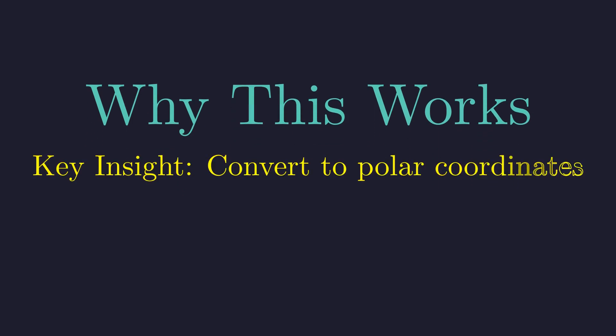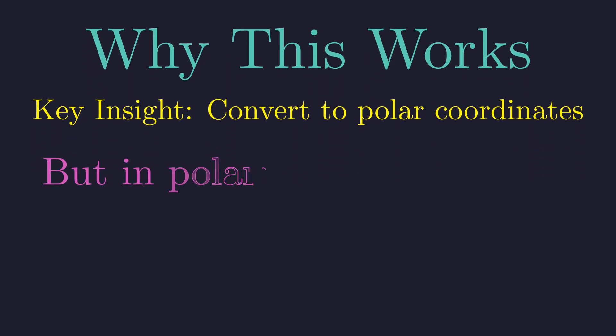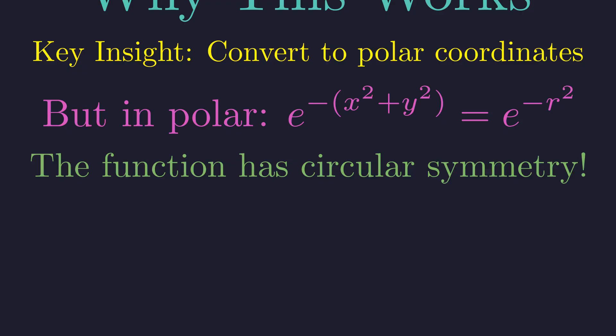So why does this trick work? The key was converting to polar coordinates. In rectangular coordinates, this integral seemed impossible. But in polar coordinates, the exponent simplifies to just negative r squared, which only depends on distance from the origin. This works because the function has perfect circular symmetry. It doesn't matter which direction you go, only how far.